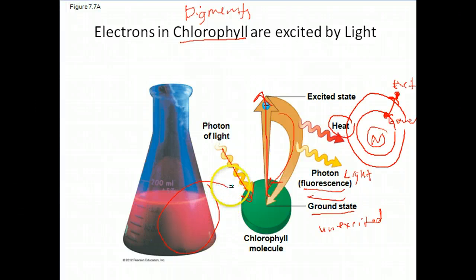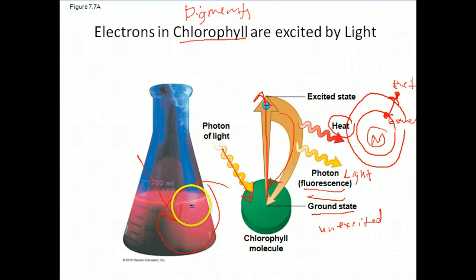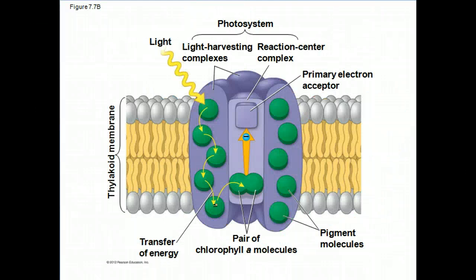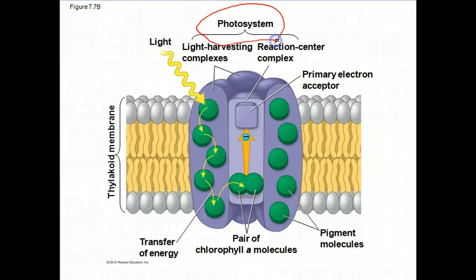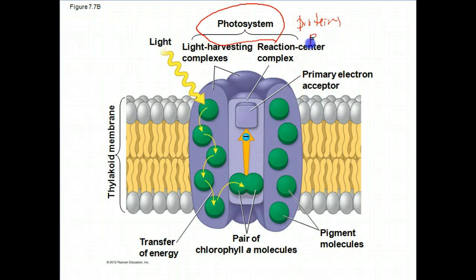That's what's shown over here — fluorescence. The chlorophyll in this suspension is going to be excited by light, and in the process of returning to ground state it's going to turn fluorescent pink. Now let's talk about a little more detail of this process as a whole. I first want to introduce you to the photosystem. A photosystem is a complex of proteins and pigments.